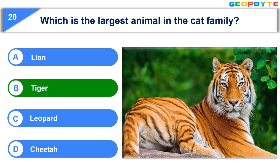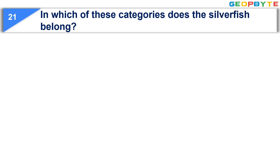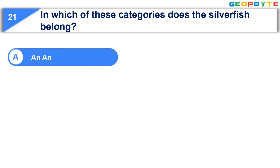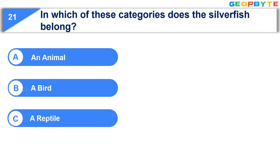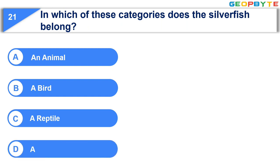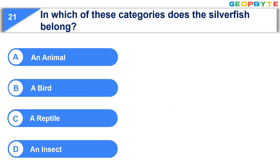The correct answer is Option B: Tiger. The 21st question is: In which of these categories does the silverfish belong? Option A: An animal. Option B: A bird. Option C: A reptile. Option D: An insect. Your time is up and the correct answer is Option D: An insect.